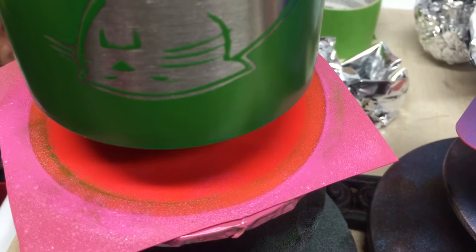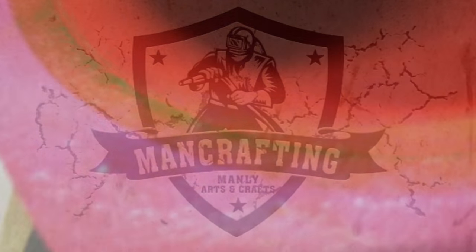Today we're going to look at one way to get a clean edge when powder coating. The first thing you're going to notice is that this silicone pad has been used several times, and we're able to do that when you're not pre-baking the cup for a second coat.